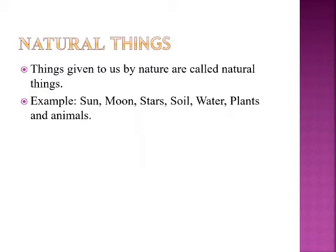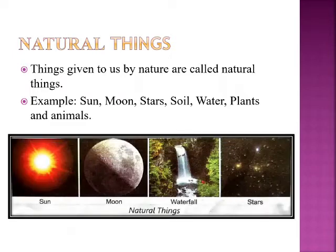Firstly, natural things. Things given to us by nature are called natural things. Examples: sun, moon, star, soil, water, plants and animals, which are shown in the pictures. These are like a gift from God for us.